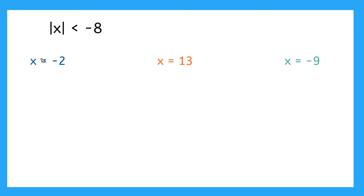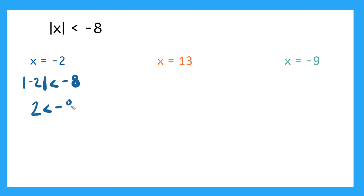Here I have negative 2. If I plug that into my absolute value, the absolute value of negative 2 is less than negative 8. The absolute value of negative 2 gives me positive 2 — is 2 less than negative 8? No way. We already knew that.